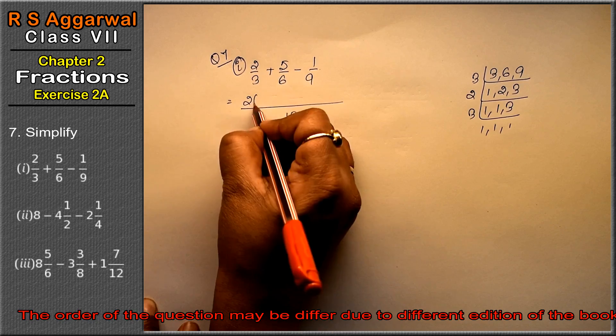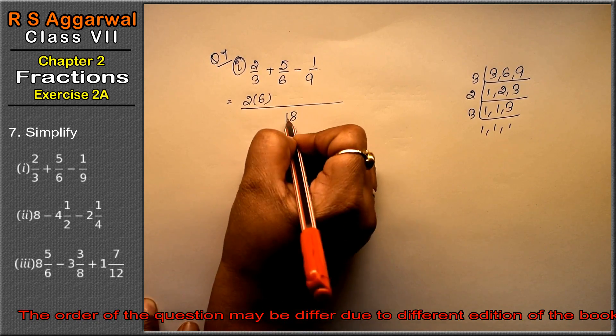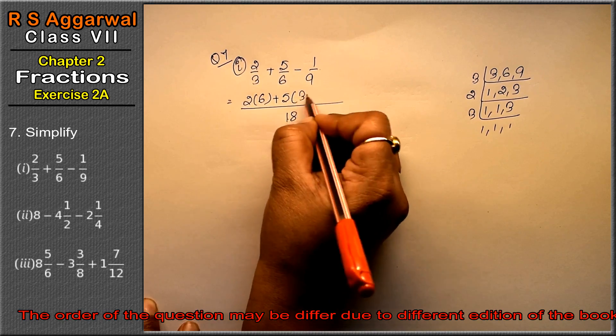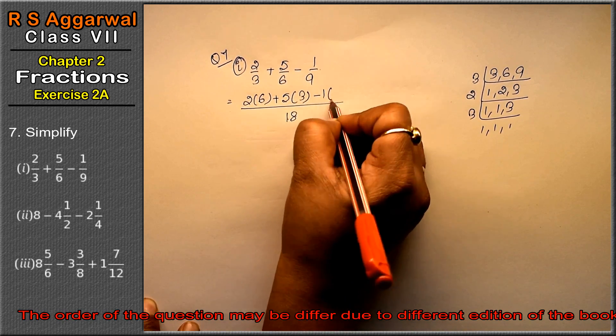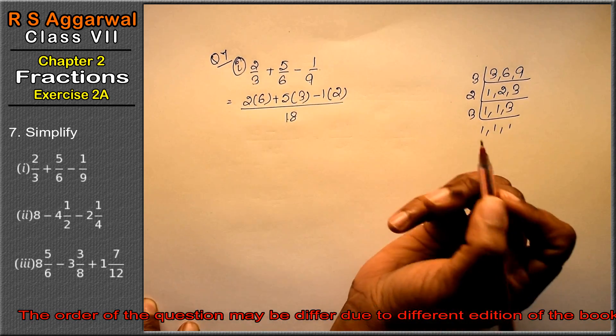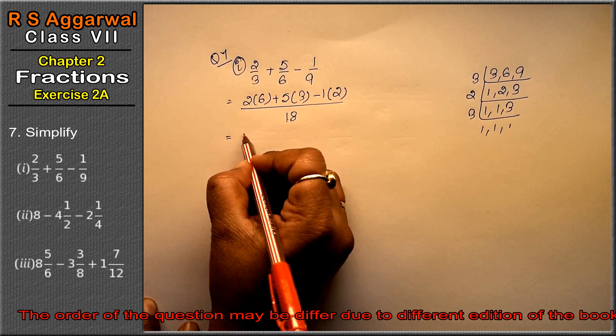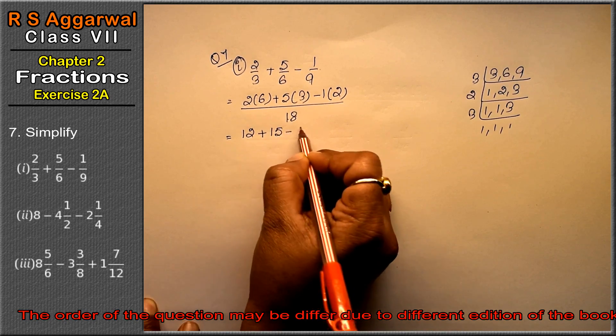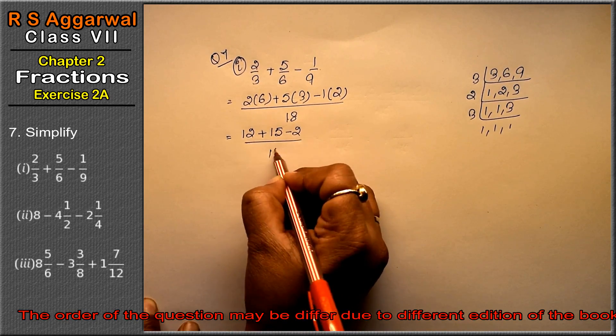Now 2 into 6 is 18 plus 5 into 3 is 15, minus 1 into 2 is 2, upon 18. So 2, 6 is 12 plus 3, 5 is 15 minus 2 upon 18.